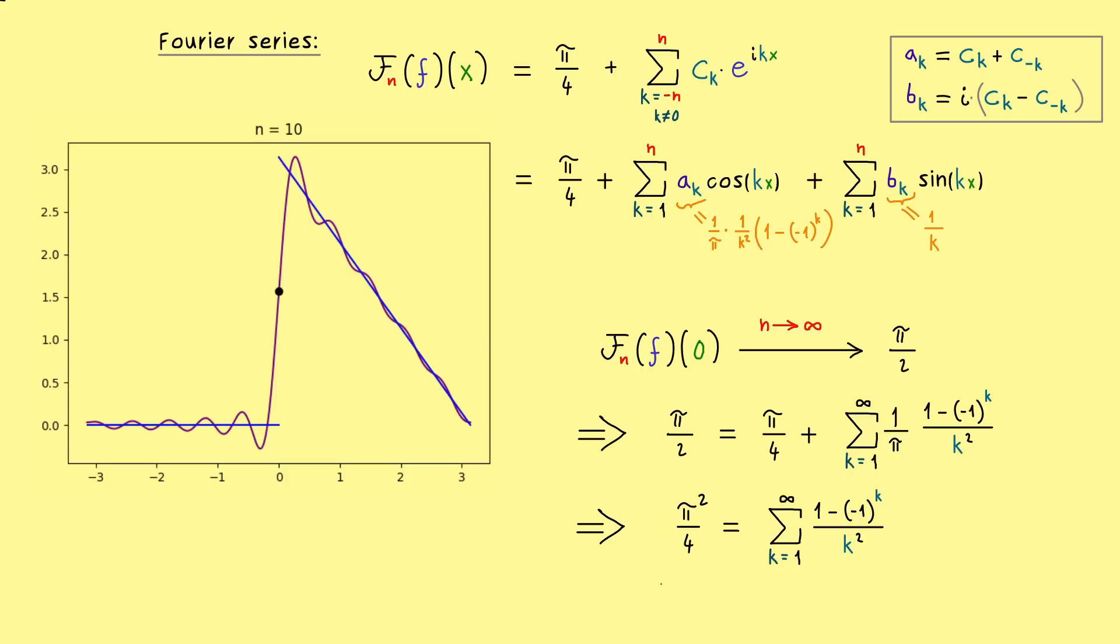So again we see that the Fourier series theory can help us to calculate explicit sums. So maybe this particular formula is not completely new, but now you see you could use different functions f to get some sum formulas out. So this is quite helpful and interesting enough that I would say we should use the next video to prove the fact that the Fourier series actually converges to this middle point.